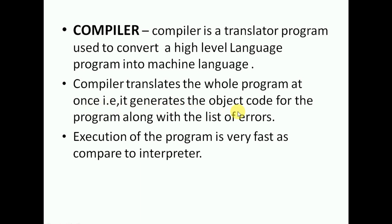A compiler translates the whole program at once, generating the object code along with a list of all errors found. You then debug and execute the program. Since the entire program is translated in one go, the execution of the program is very fast.